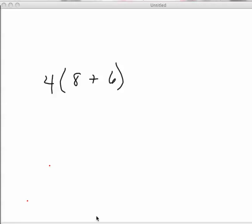But you could also distribute the 4. By distributing the 4, I'm going to multiply the 4 times the 8 first. So I would do 4 times 8, and then I'm going to add that to the product of 4 times 6.